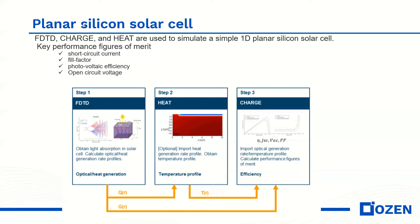As you see here the workflow of solar cell simulation, we start with Lumerical FDTD. We calculate optical and heat generation. The output of heat goes to the heat solver where we extract temperature profile, and the optical generation goes to Lumerical charge where we can calculate parameters like efficiency, short circuit current, open circuit voltage and fill factor.